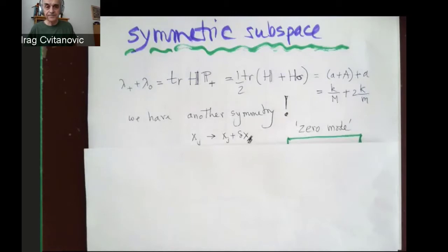And there is one symmetry that's so obvious we didn't even think about it. What happens to this system if I translate and put it someplace else? Its energy doesn't change. It's Galilean invariance of this problem.